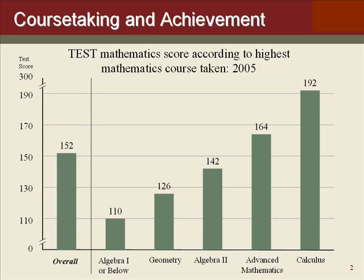A few things to note on this graph. First of all, there are horizontal lines going across — I'm not sure what they really add to understanding. But one of the biggest challenges is the fact that when you look at the first course, Algebra 1 or below, the score is 110, and the last course on the right, Calculus, is 192. When you look at the size of those bars, the Calculus bar is over five times the height of Algebra 1 and below, which suggests visually that somebody who takes Calculus scores five times better on this test. That's an incredible difference.